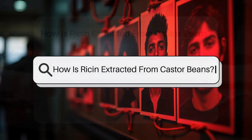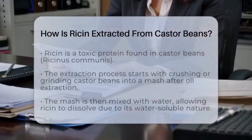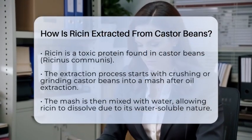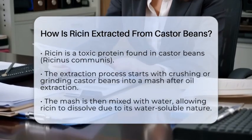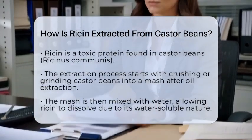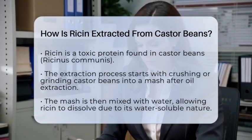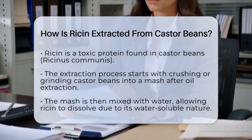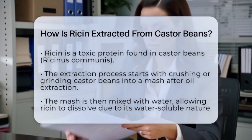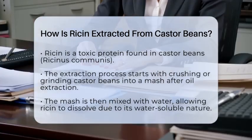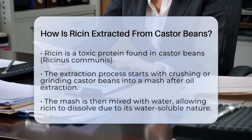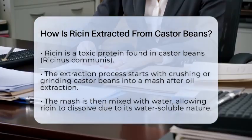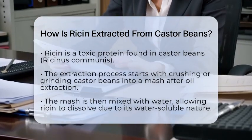How is ricin extracted from castor beans? Have you ever wondered how a substance as dangerous as ricin is obtained from something as common as castor beans? Ricin is a highly toxic protein found in the seeds of the castor oil plant, known scientifically as Ricinus communis. This protein is made up of two parts, called polypeptide chains, connected by a bond.